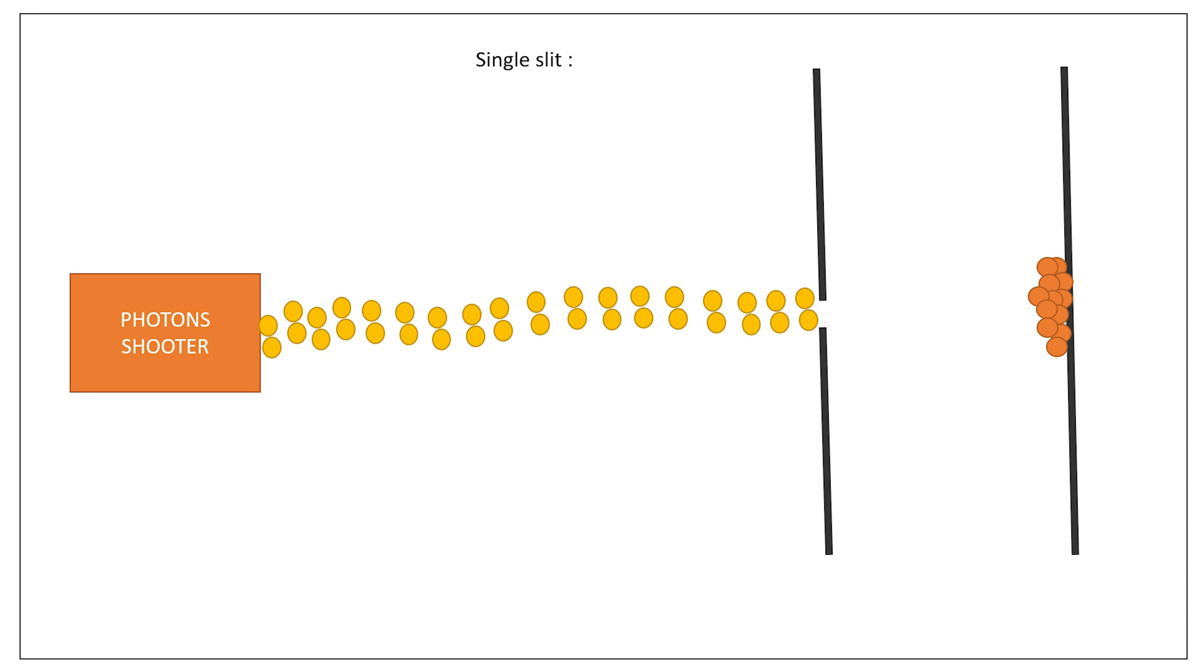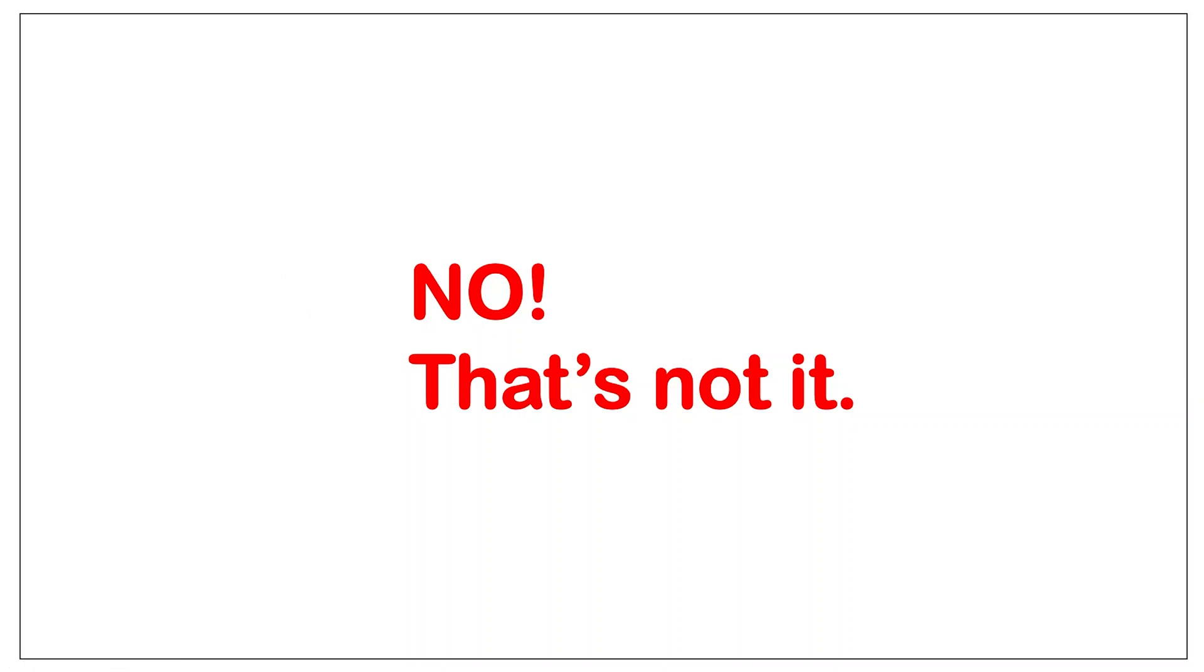Now notice, instead of two slits, if we had one, then there would be no interference. Hence, light would be a particle in this case. No, that's not true.